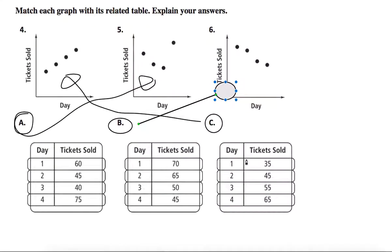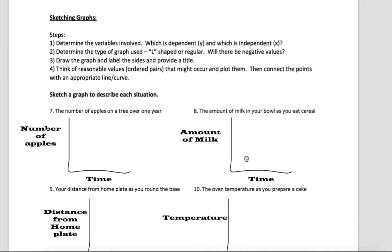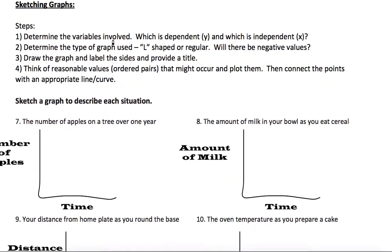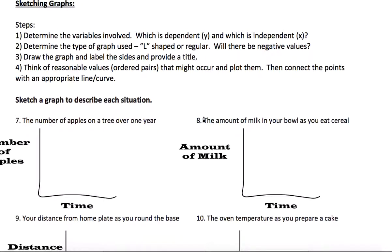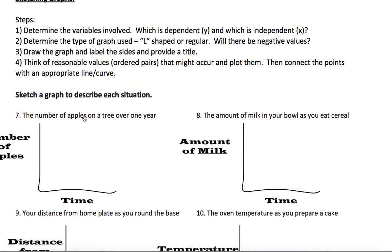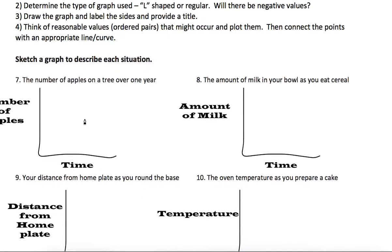As far as sketching these out, we've been reading these, we've been interpreting the variables, but sometimes we have to actually sketch out what we think is going to happen. Following the steps here: determining the variables that we need, what could go on x, what could go on y, what's dependent or independent. Determine the type of graph if it's just going to be an L with positive values, will there be negative values. Draw, label, provide a title. Think of reasonable values that might occur and plot bone, and if possible connect the points if we need to.